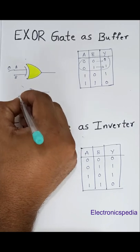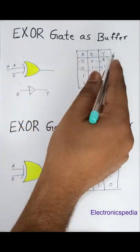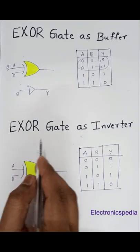So whatever input I'm going to give, I'm going to get it as output. This is how the XOR gate works as a buffer. Now for the XOR gate to work as an inverter, I'm going to look at this truth table. These are my inputs A and B.